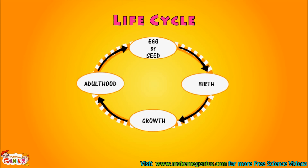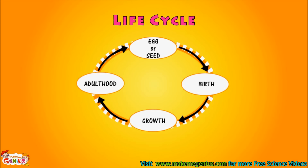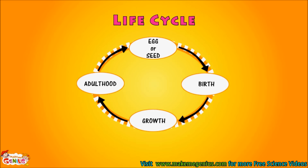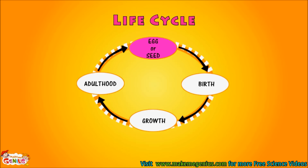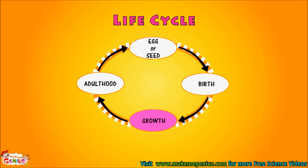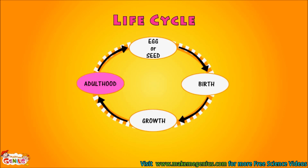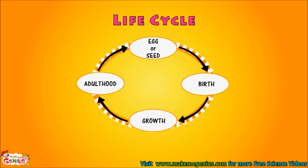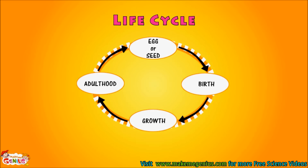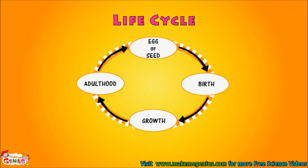This picture shows a simple life cycle. All living species keep changing throughout their life. It starts from egg or seed, they take birth, they grow up, then they become adults, and they reproduce at this stage. When a plant or animal reaches young age, they can make babies.